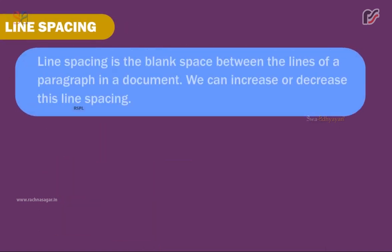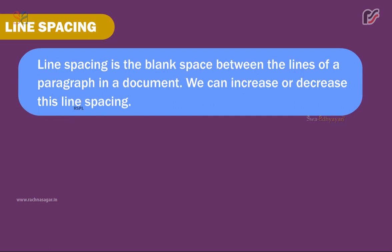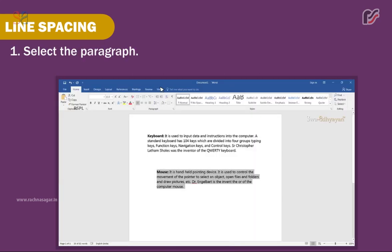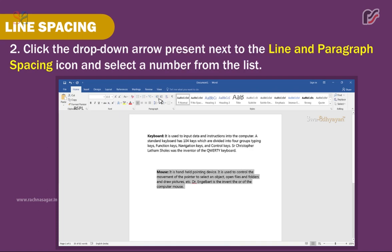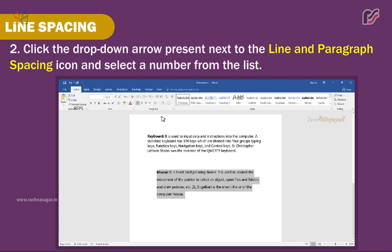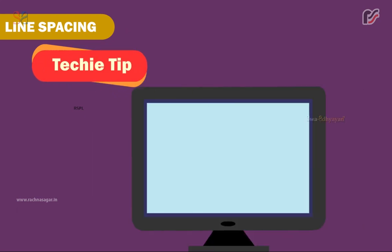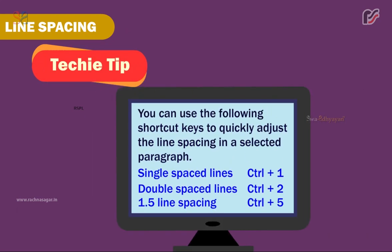Line spacing is the blank space between the lines of a paragraph in a document. We can increase or decrease this line spacing. Steps to add line spacing to a paragraph: 1. Select the paragraph. 2. Click the drop-down arrow next to the Line and Paragraph Spacing icon and select a number from the list. 3. The selected line spacing is applied to the selected paragraph. Shortcut keys: single-spaced lines Ctrl+1, double-spaced lines Ctrl+2, 1.5 line spacing Ctrl+5.